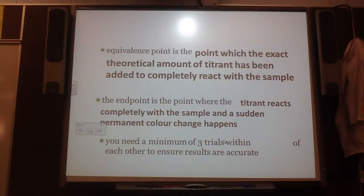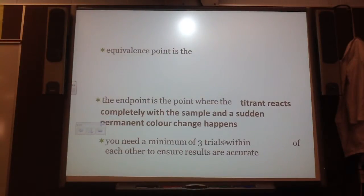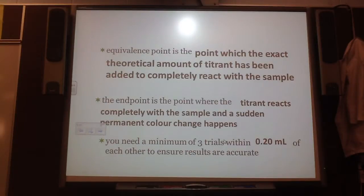Now, you need a minimum of three trials within 0.20 milliliters of each other to ensure your results are accurate. If you have a result that is more than 0.2 milliliters apart from each other, that's called your outlier, you don't include it in your data. That's pretty important. So anything that's not within that minimum 0.2, you don't include.